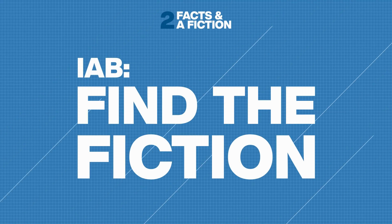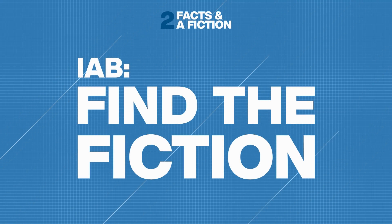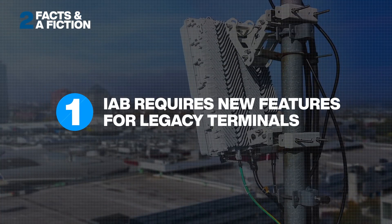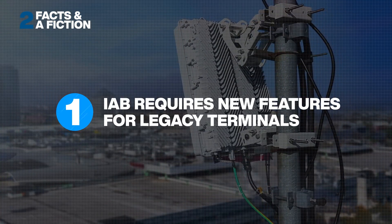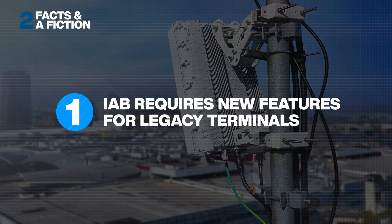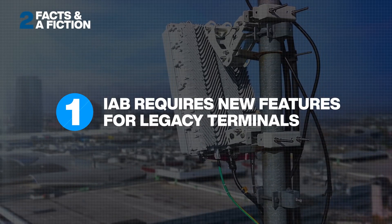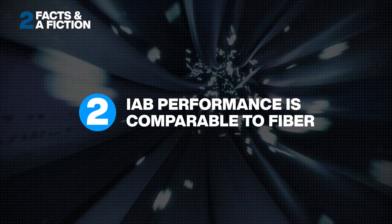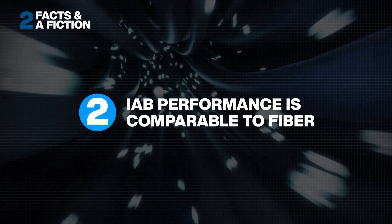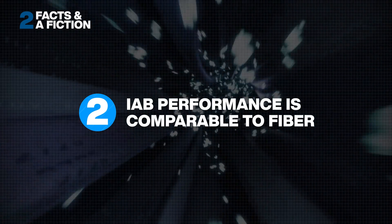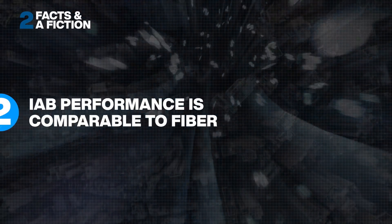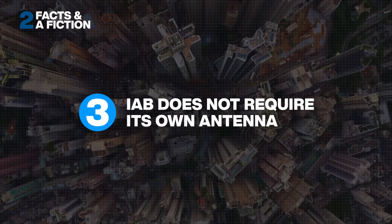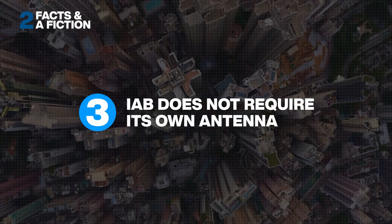Let's see how well you know IAB. Listen to these three statements — only two are true. Can you tell IAB fact from fiction? Number one: the 3GPP standard supports IAB and legacy terminals only, with new user equipment features or standardizations. Number two: IAB has comparable performance at 5G millimeter wave frequencies as fiber backhaul. Number three: IAB is better than current wireless backhaul technologies because it does not require a separate antenna.